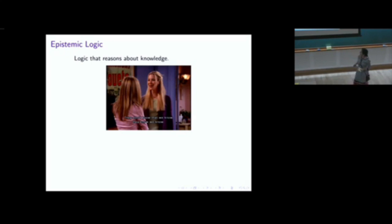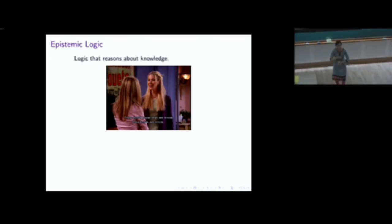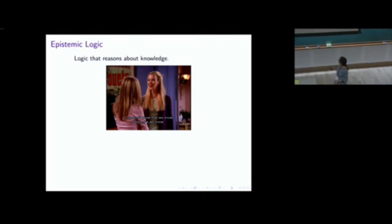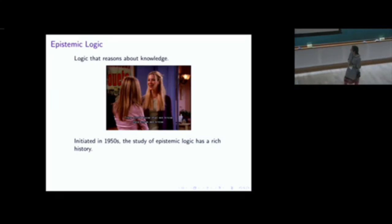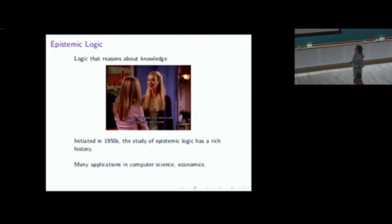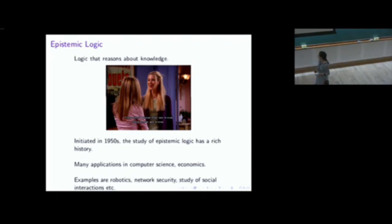When somebody says they don't know something, we start arguing about what do we know as a result of that. Epistemic logic is a branch initiated in the 1950s and has seen many applications in computer science and economics — including robotics, network security, and the study of social interactions.